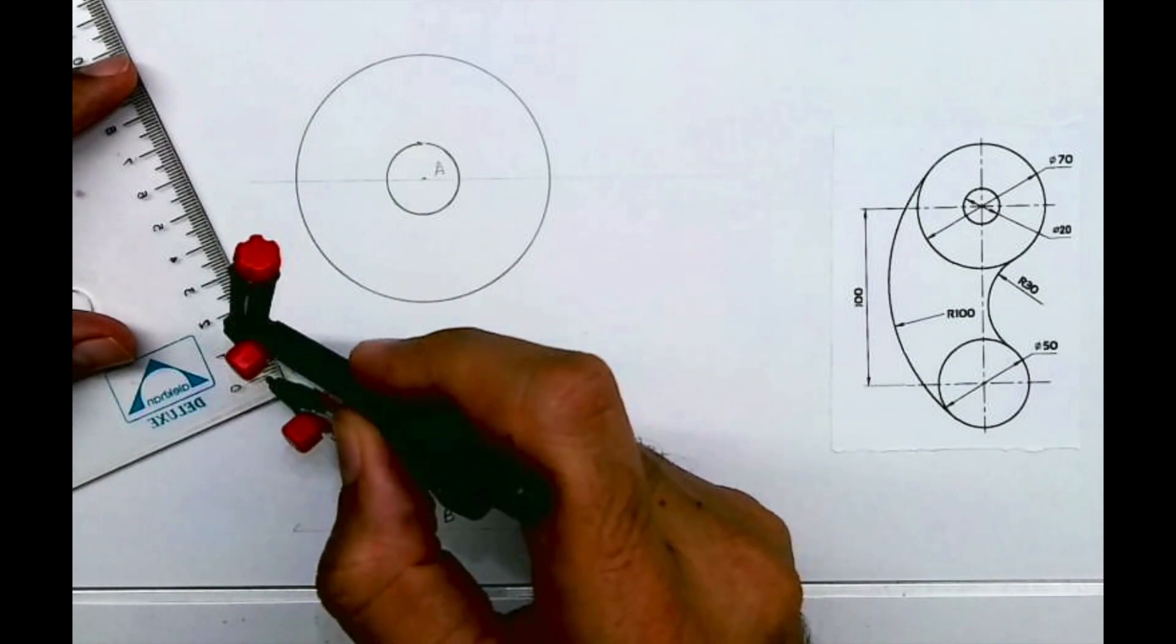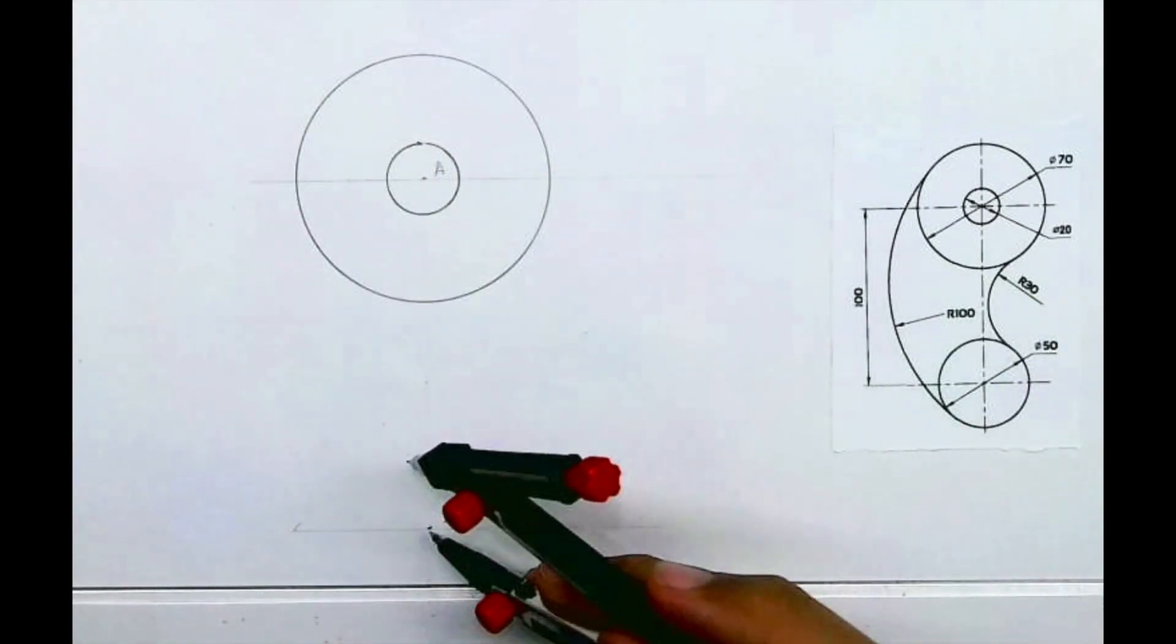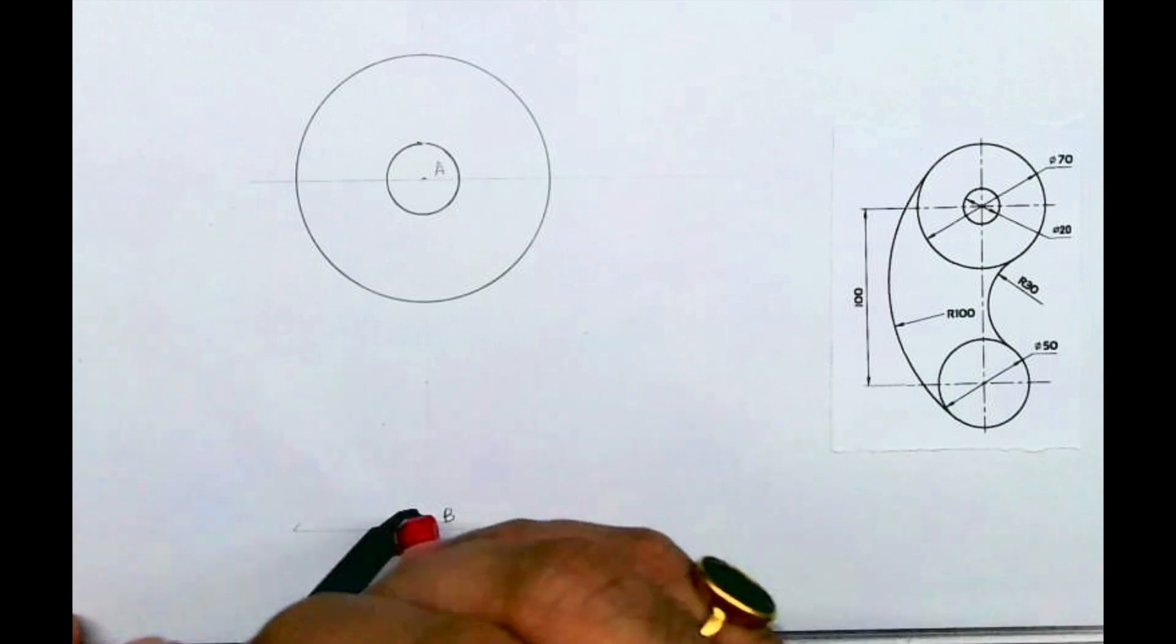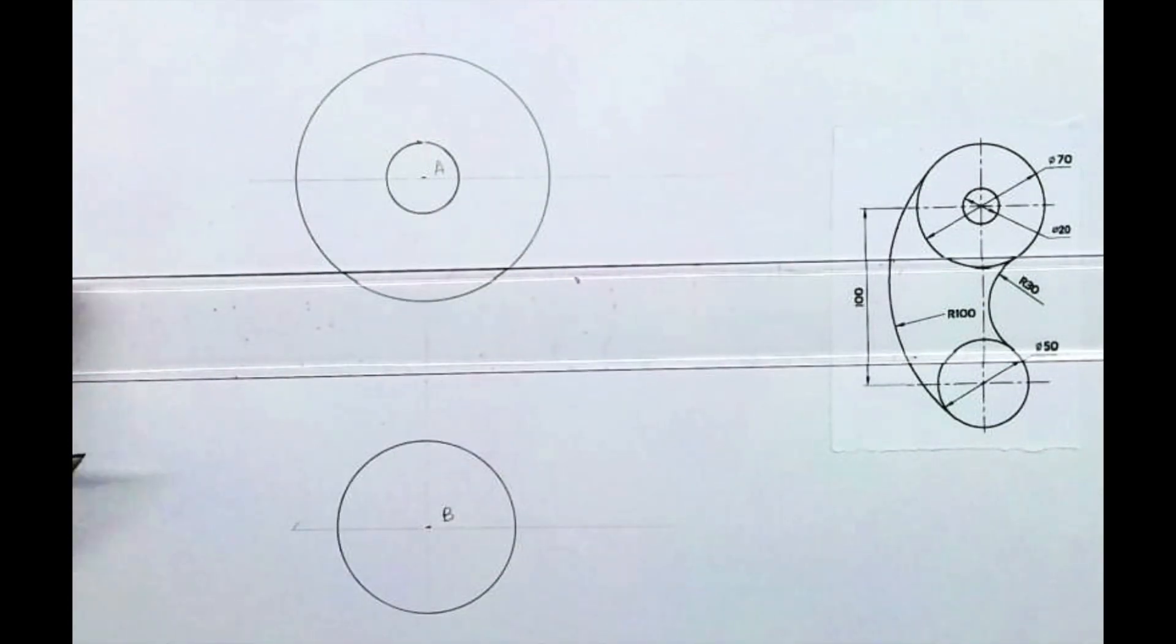Then radius 25. This is how you'll get three circles. Now we need to draw radius 30, which is an external arc.